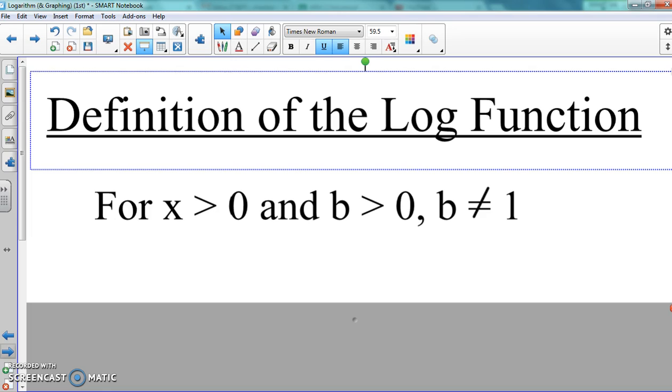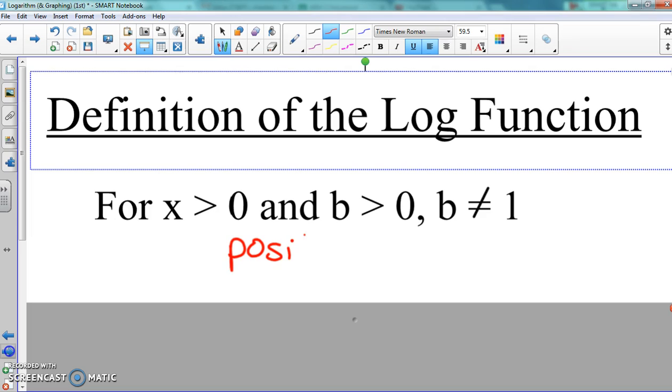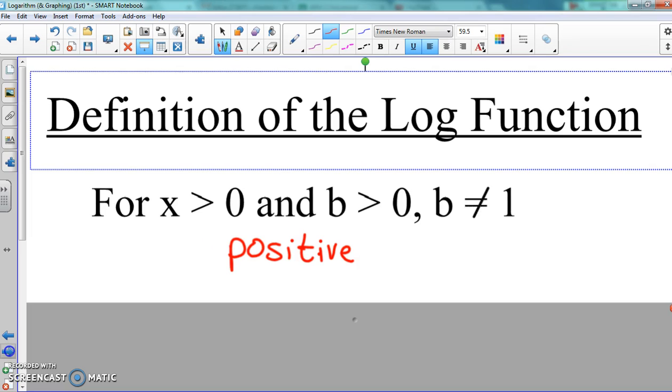Hopefully everybody thought something is greater than zero or bigger than zero means it's a positive number. When it comes to x and b here, these are always going to be positive numbers. If they're negative, you just stop right there and say that it cannot be done. x cannot be negative and b cannot be negative.